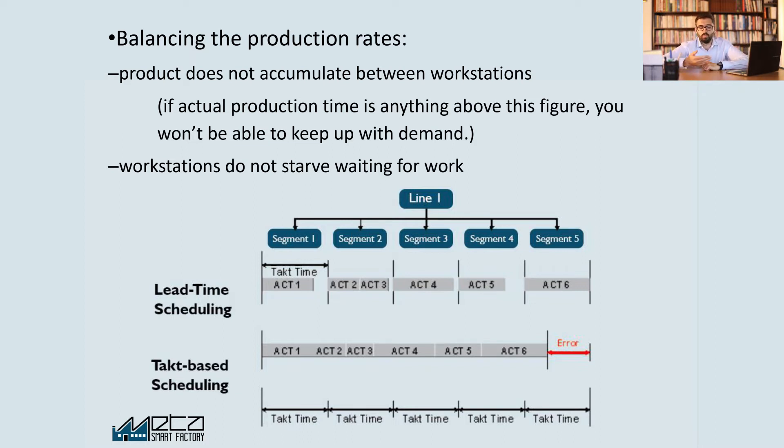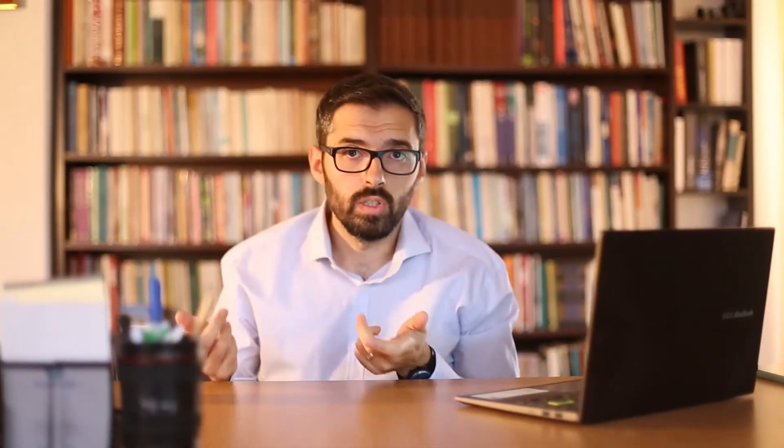When we have shorter operations, there will be gaps. When there are longer operations, the operator will need more time and things get complicated. Planners balance this by putting a short operation next to a longer one — for example, if one operation is three minutes and the other is seven minutes, the total is 10 minutes for both, so the average is again five minutes. But you cannot do this all the time; you have to plan what type of models are coming one after the other so that the system resolves these imbalances.